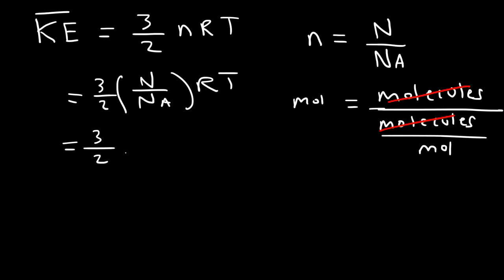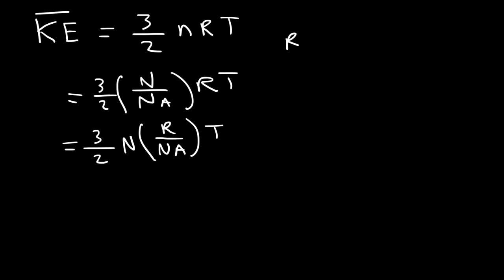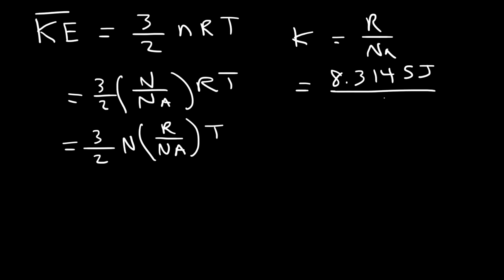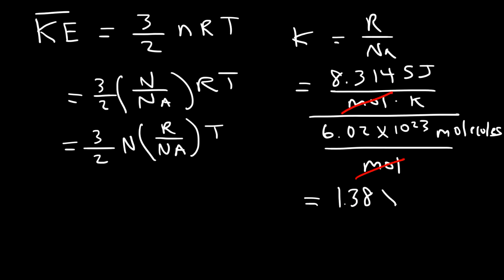This is going to be 3 over 2 times the number of molecules times R over Nₐ. R over Nₐ will give you Boltzmann's constant. So Boltzmann's constant, represented by the symbol k, is R over Nₐ. R is 8.3145 joules per mole per Kelvin, and Avogadro's number is 6.02 times 10 to the 23 molecules per mole. We can cancel the unit moles, and 8.3145 divided by 6.02 times 10 to the 23 equals 1.38 times 10 to the minus 23. The units are joules per Kelvin per molecule.